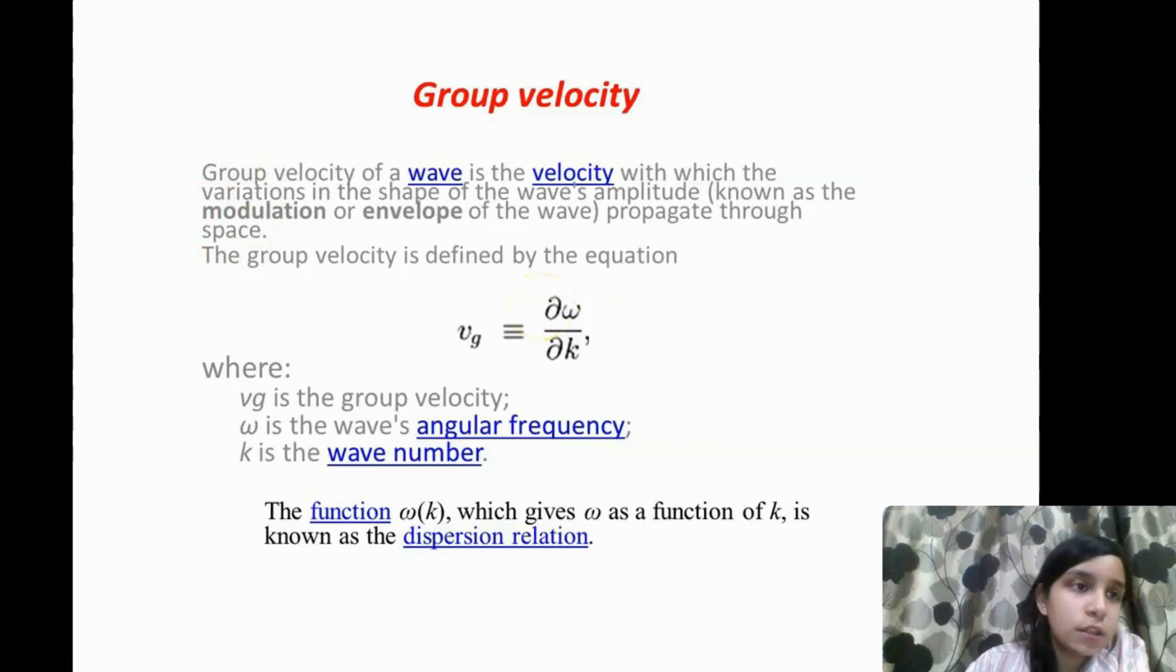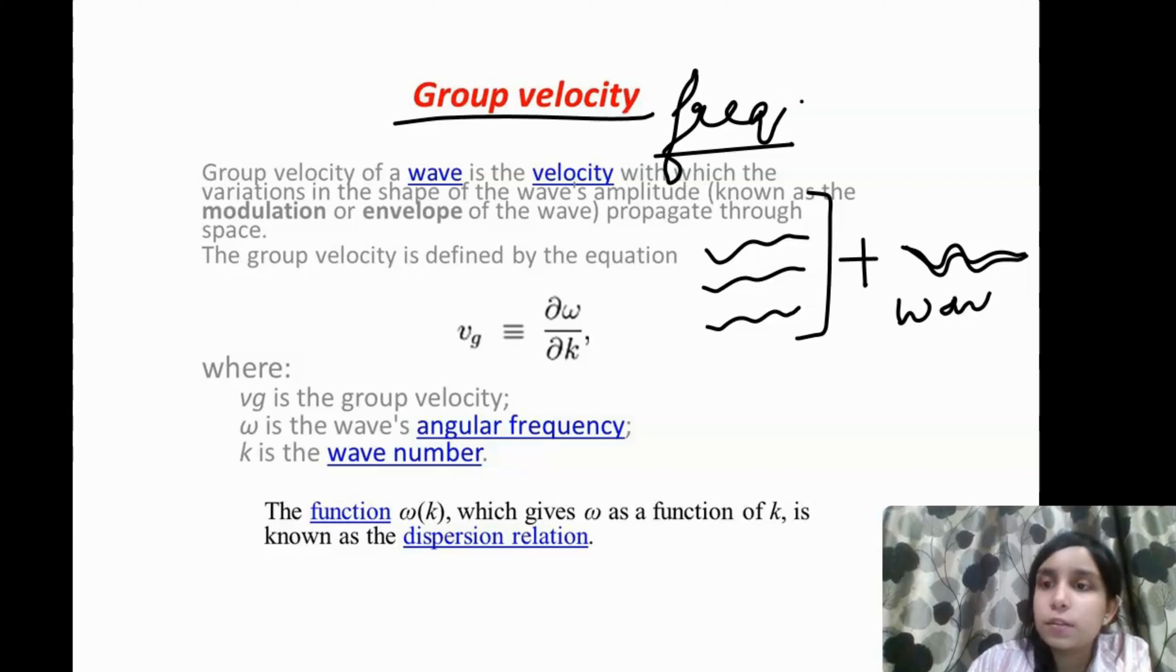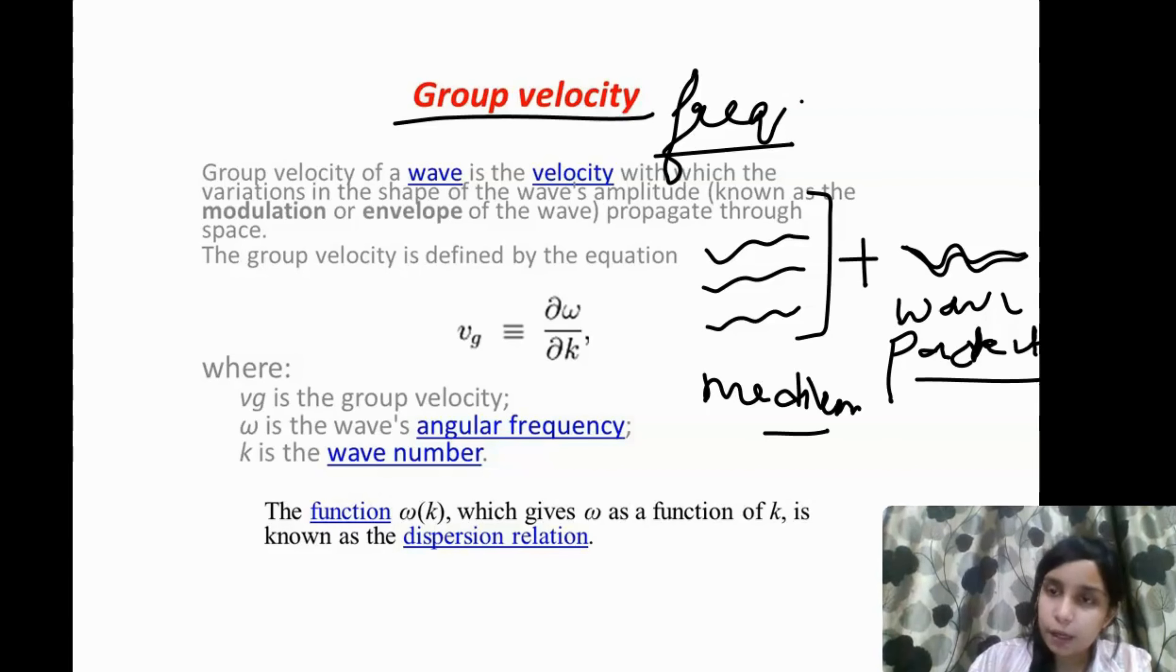So coming towards the group velocity. Now what is the group velocity? From the name. Group. That is the number of waves. When the number of waves are moving in a medium, in which the frequencies are slightly different. The number of waves are moving in a medium, any medium. And when their frequencies are slightly different, so they make a group which is called wave packet. We call the velocity of this wave packet.